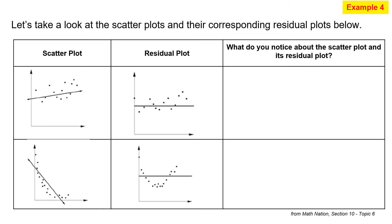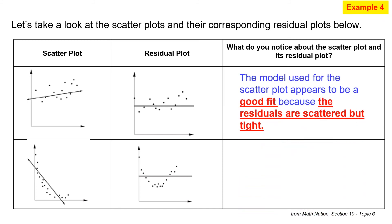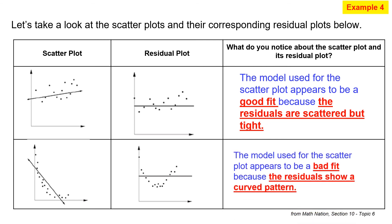For Example 4, we analyze what we see in scatter plots and their corresponding residual plots. For the first example, the model appears to be a good fit because the residuals are scattered but tight — random and tight. For the second one, it is not a good fit because there is a curved shape in the residual plot. Any time you see a curved shape or a pattern, the residual plot indicates a poor fit.